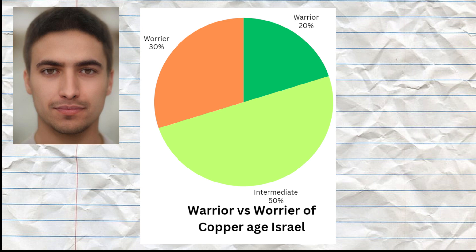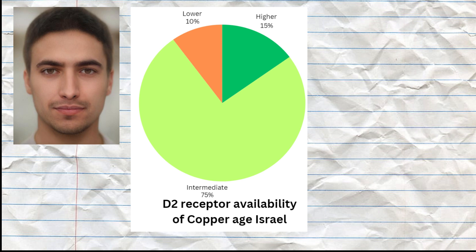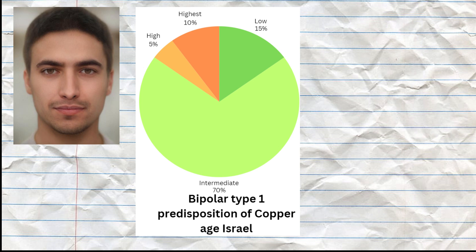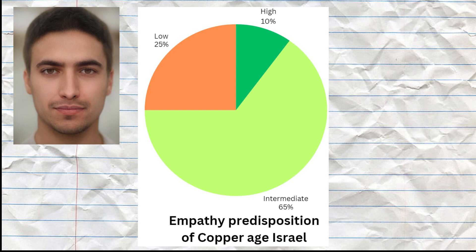When it comes to the warrior versus worrier trait, they had a predisposition to the warrior phenotype, which means a predisposition to higher dopamine levels and lower stress tolerance — a typical predisposition for Europeans and populations adjacent to Europe. They had predispositions to average availability of D2 receptor sites, predisposing them to average odds of ADHD, bipolar, and schizophrenia, as well as average predisposition to bipolar disorder type 1. One of them had long-form 5-HTT LPR, which is protective from depression and anxiety and is most common in Europe. None of them were lactase-persistent.